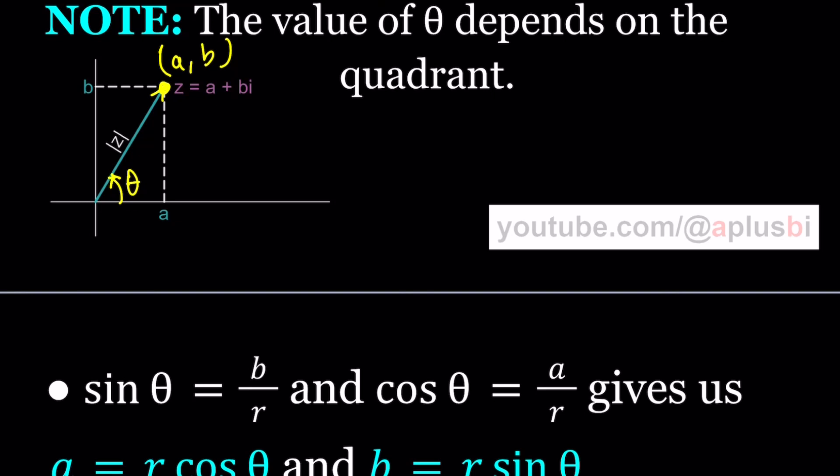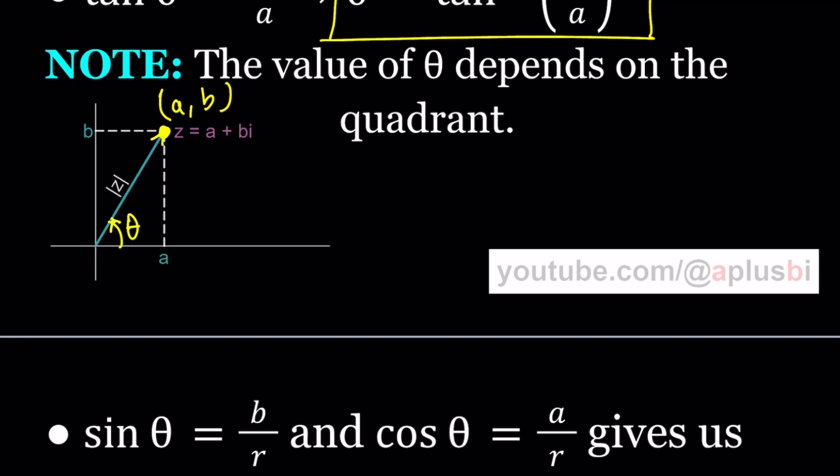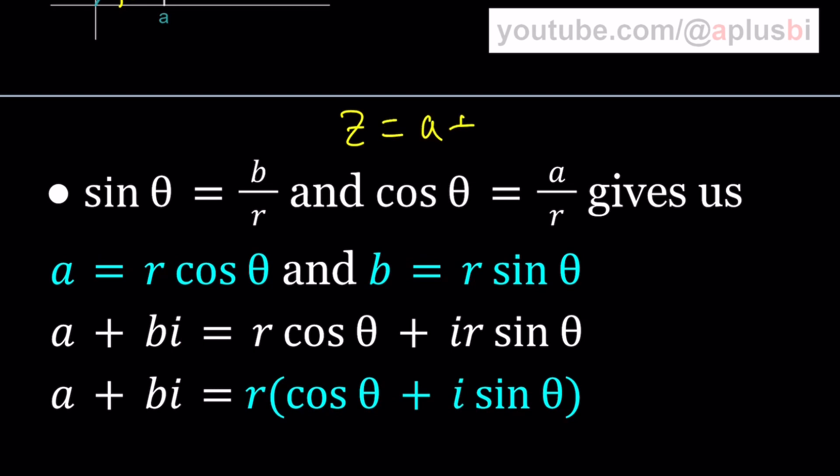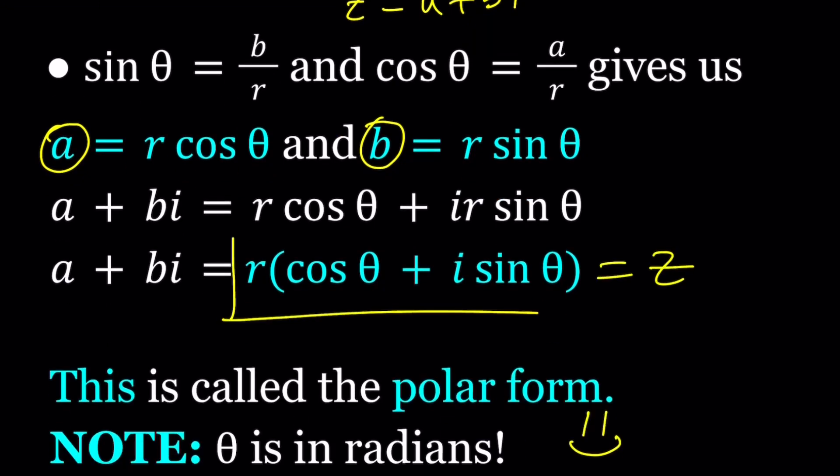So we can basically plot a complex number where theta is the angle as shown, and our complex number A plus BI is represented by an ordered pair A comma B. We talked about sine and cosine values, and remember the absolute value of Z is also denoted by R. That's the modulus, and then we can find the sine and cosine, and by plugging those into Z equals A plus BI, replacing A with this and B with that, we get our number in this form: R times cosine theta plus I sine theta, where R is the modulus and theta is the argument, which is shown as ARG. This is called the polar form.